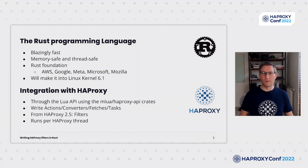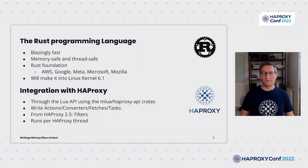In 2021, the Rust Foundation was established with five founding corporate members, which includes Amazon Web Services, Google, Mozilla, and Microsoft. In addition to that, Rust will be included in Linux kernel 6.1. At the time of recording this presentation, Linus Torvalds released the release candidate version of Linux kernel for everyone to test, which includes initial Rust support.